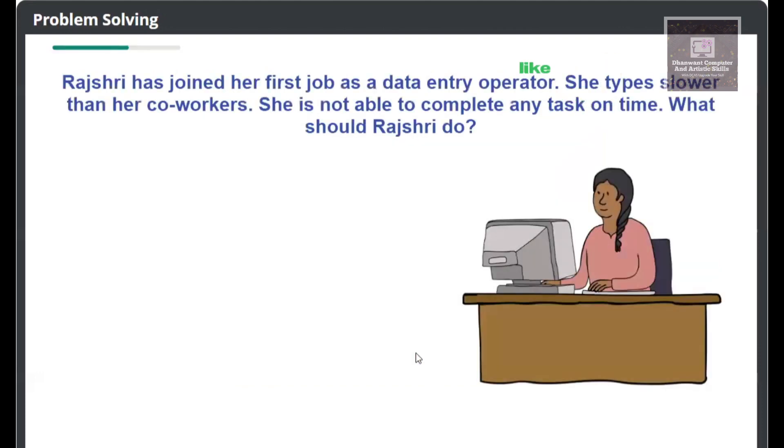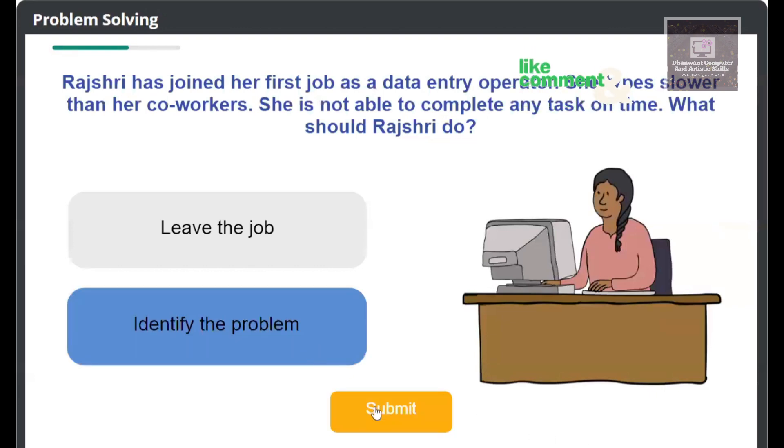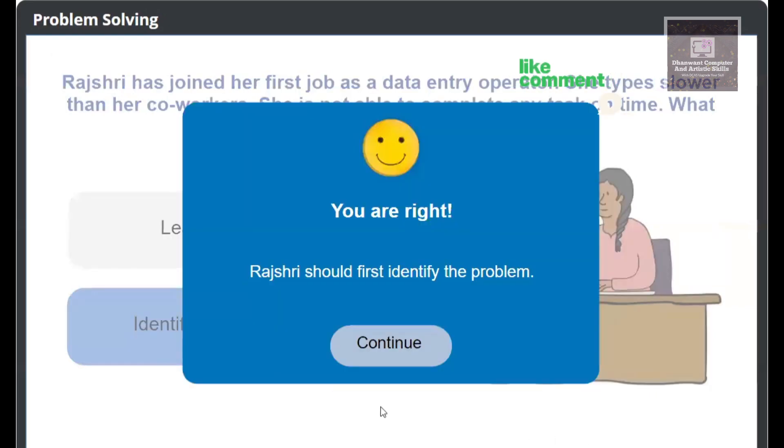Rajshree has joined her first job as a data entry operator. She types slower than her co-workers and is not able to complete any task on time. What should Rajshree do: leave the job or identify the problem? You're right, Rajshree should first identify the problem.